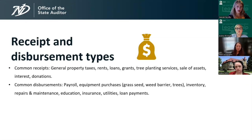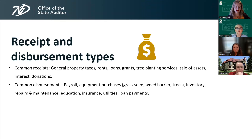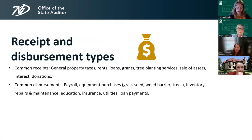Moving on to receipt and disbursement types. Common receipt types we see in soil conservation districts include general property taxes, rents, loans, grants, tree planting services, sale of assets, interest, and donations. The bottom line is that anything deposited into your bank account is a receipt.